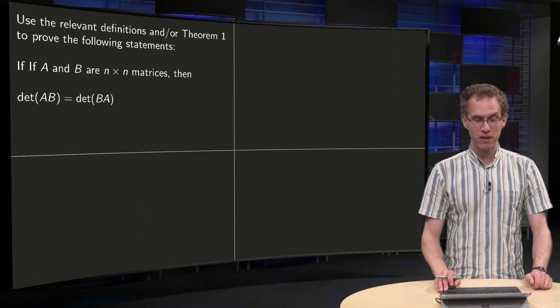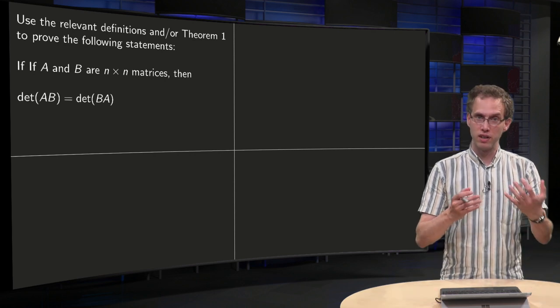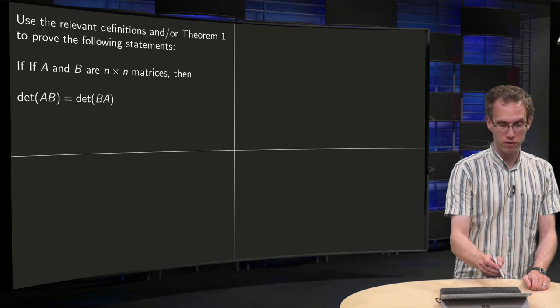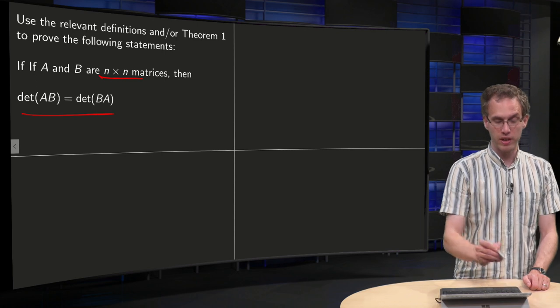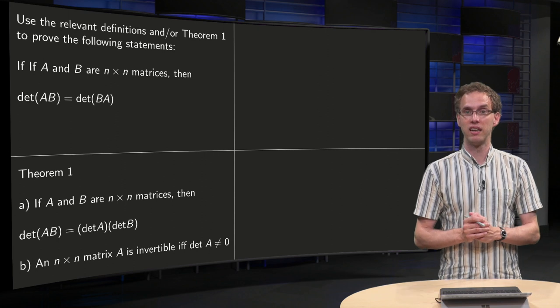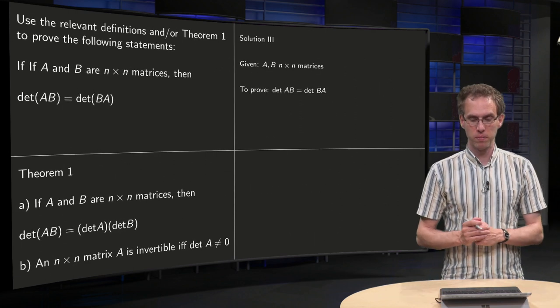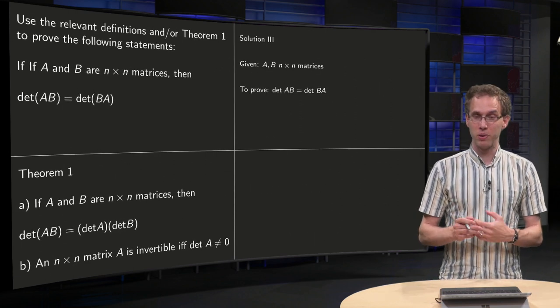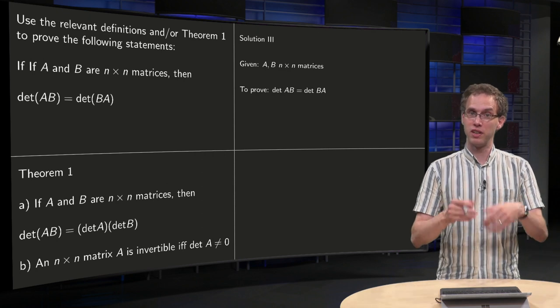Next attempt. So let's repeat the question. We wanted to prove for square matrices that det(AB) equals det(BA). And we could use theorem 1 if we like. So what can we do? What's given? It's always a good approach to write down what's given.